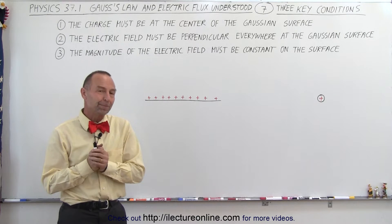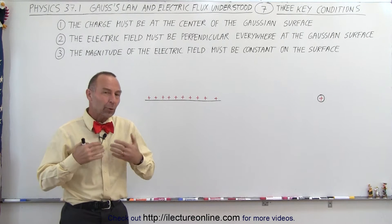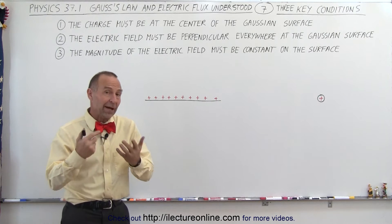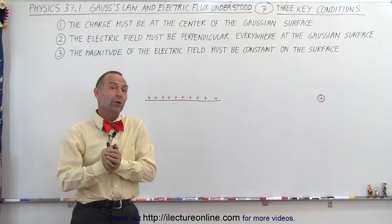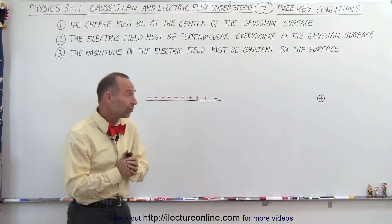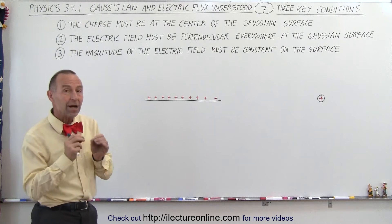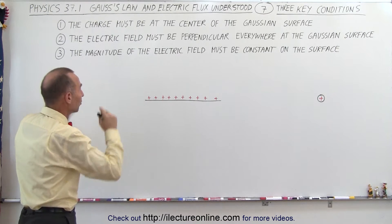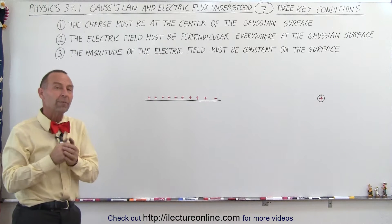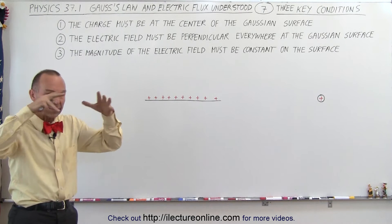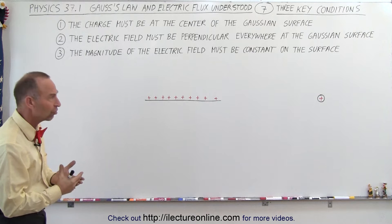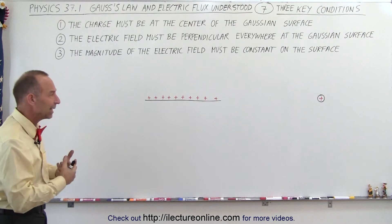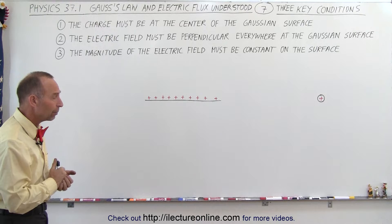Welcome to ElectronLine. If we're going to use Gauss' law to solve some of the problems that we probably have to solve in our homework assignments or on our tests, then we need to be cognizant — we need to be aware of these three conditions. These are three key conditions that must be true for us to be able to draw a Gaussian surface around the charge distribution and to be able to employ this law to solve these problems.